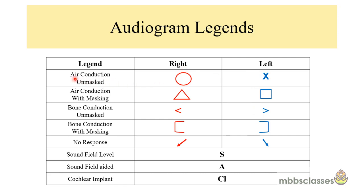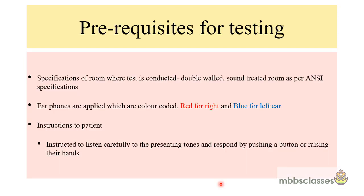A red circle signifies air conduction unmasked, while a cross or X is used for the left ear. A red triangle signifies air conduction with masking, whereas a square is used for the left ear. Bone conduction unmasked points toward the respective side in red for right and blue for left, and a square box is used when bone conduction is done with masking. A downward-pointing arrow signifies no response. S stands for sound field level, A for sound field aided, and CI for cochlear implant.